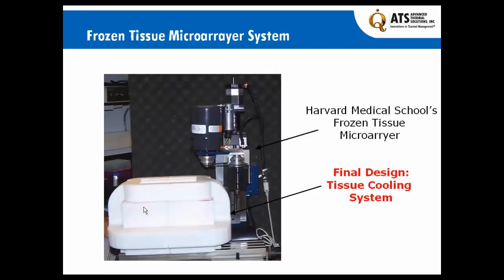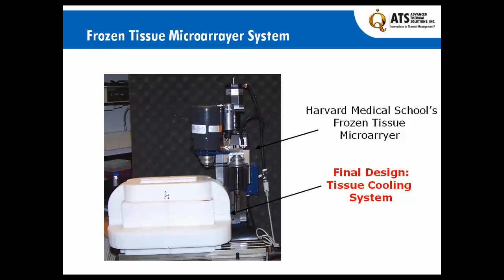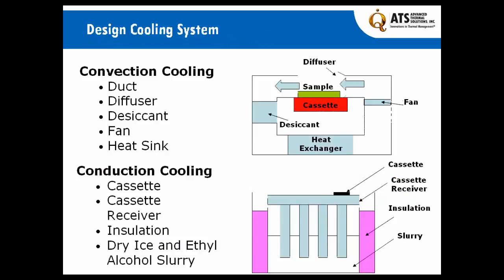As a general overview, we have a prototype sample that sits on a slide, and then a core machine that will come down. We have a reservoir in the center that holds the cooling medium. The tissue samples are loaded in the top through an opening. And then we have a duct that cycles cool air over the samples to maintain its temperature and humidity requirements.